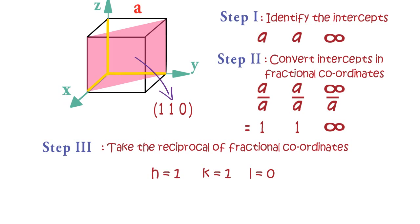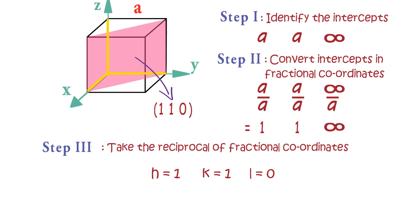If reciprocal obtained is not an integer, then multiply all the reciprocals with the LCM of the denominator of all the three values obtained.